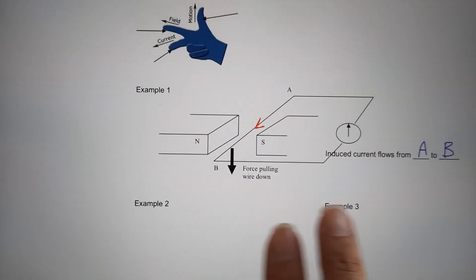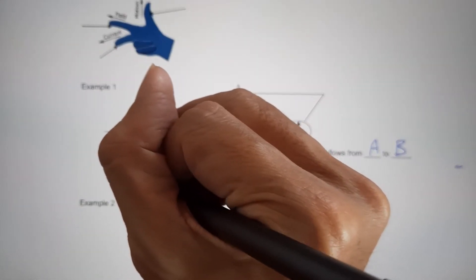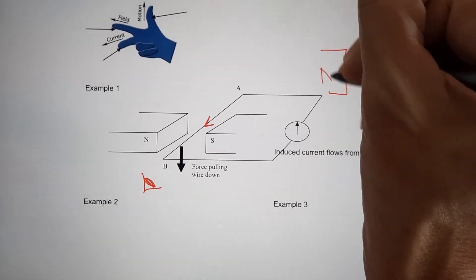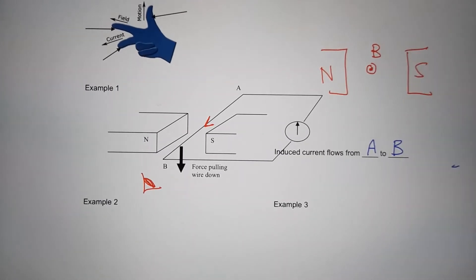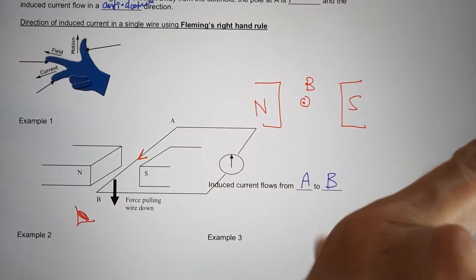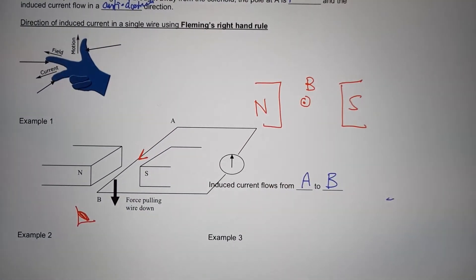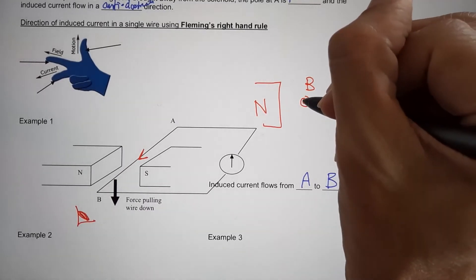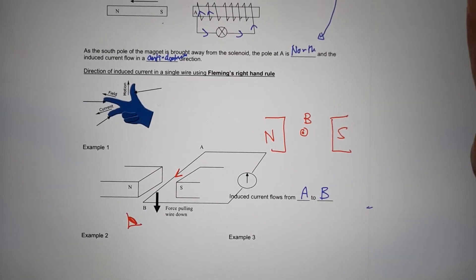Practice this by yourself. If you find it a bit difficult, you can draw a side-view diagram — imagine looking from one end of the setup. You see north here, B is here, and south is on the other side. A dot means the current is coming out toward you. So with north-to-south field and force pointing down, you will find the induced current is coming out, represented by a dot. Try to apply it on your own.